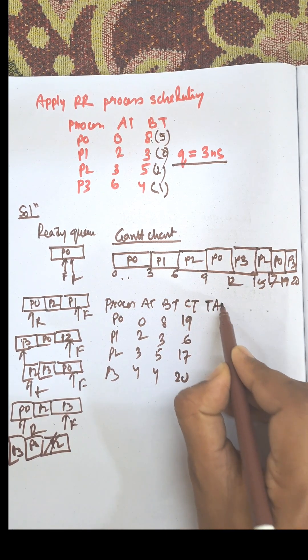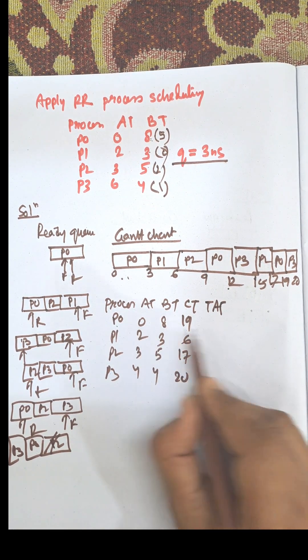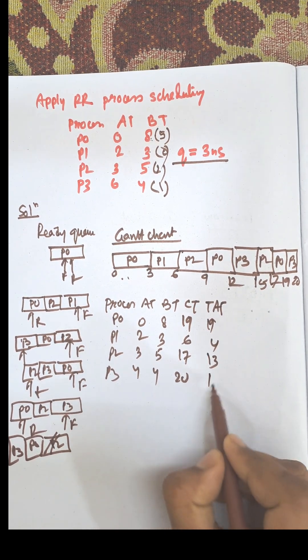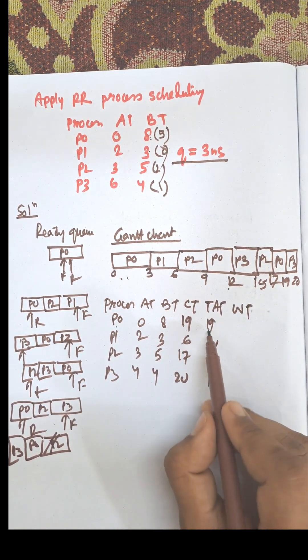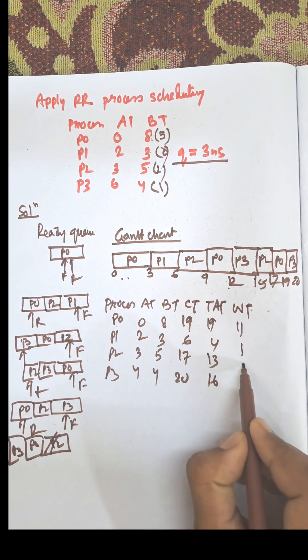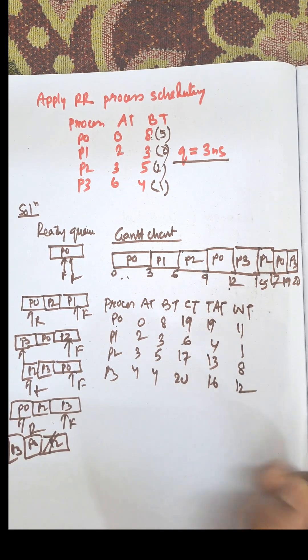Now the next one is turnaround time. Completion time minus arrival time: 19 minus 0 equals 19, and 6 minus 2 equals 4, giving us 13 and 16. Waiting time equals turnaround time minus burst time: 11, 1, 8, and 12.